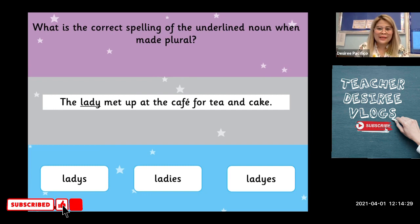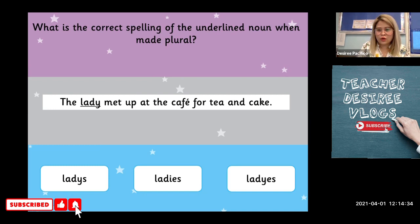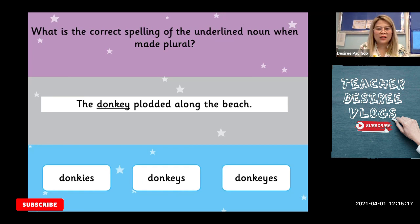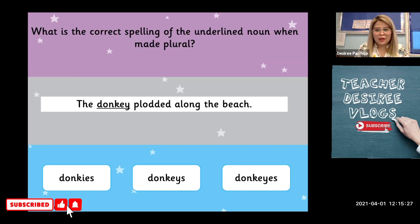The lady met up at the cafe for tea and cake. Now the underlined word is lady. Here are three words that you can choose from — which do you think is the correct answer? I would like you to write it in your book. Let's move on to the next one: the donkey plodded along the beach. Our underlined noun is donkey.